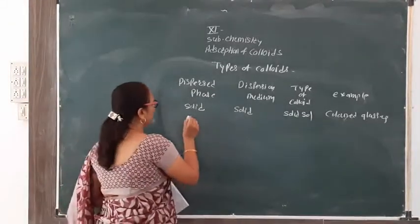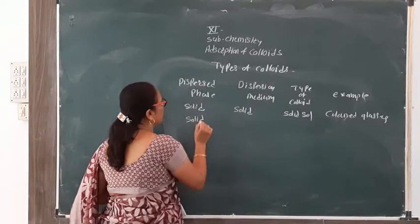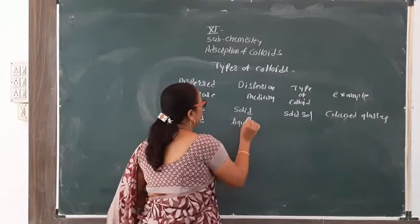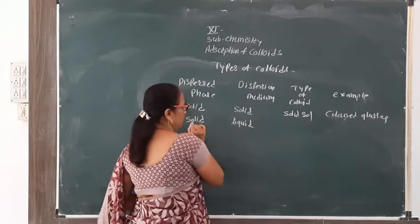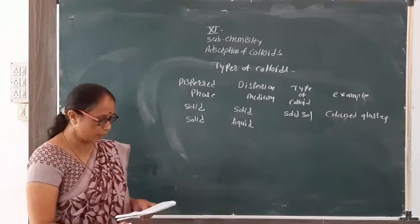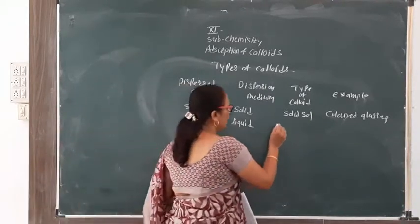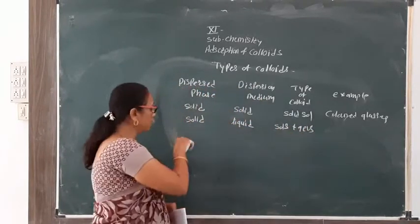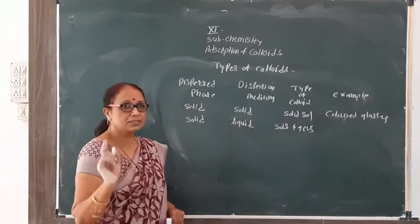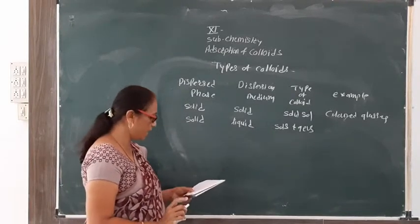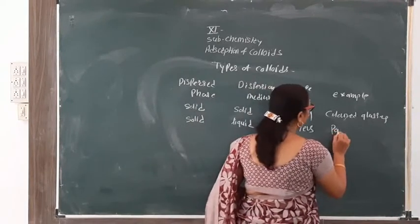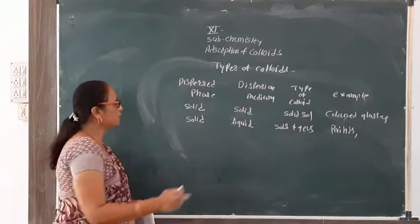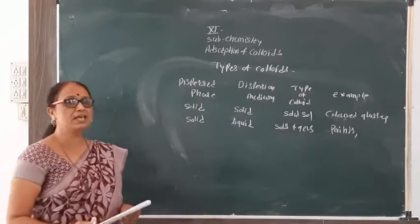When the dispersed phase is solid and the dispersion medium is liquid, this is a solid-in-liquid type of colloid, which is called sols and gels. Examples include paints and muddy water.